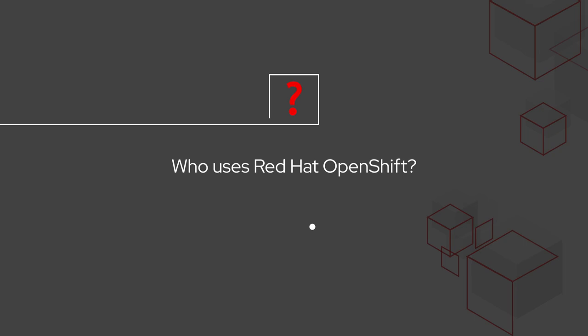OpenShift is used by enterprise customers around the world in every industry vertical — from Amsterdam Airport, to Exxon Mobil, to Deutsche Bank, to HCA Healthcare. OpenShift is helping customers like these run their most critical applications today. Our goal is to help you unlock the full potential of Kubernetes to transform your own business.